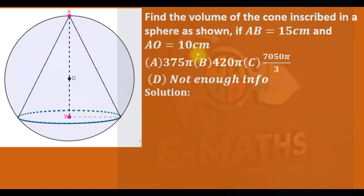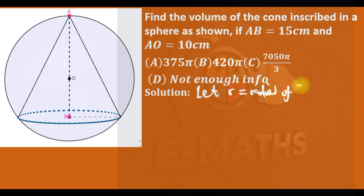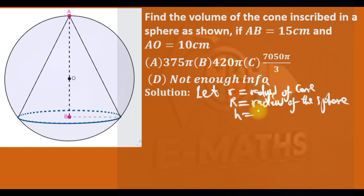We are asked to find the volume of a cone inscribed in a sphere, given that AB is 15 cm and OA is 10 cm. I will first use a formula to solve the question and later derive it. Let small r equal the radius of the cone, big R equal the radius of the sphere, and H equal the height of the cone.